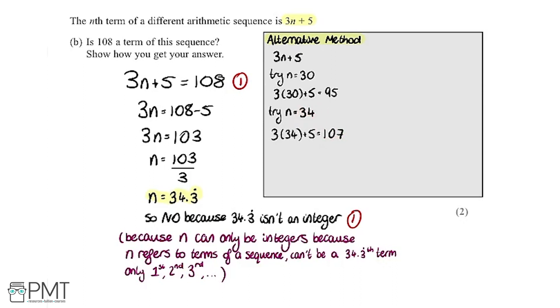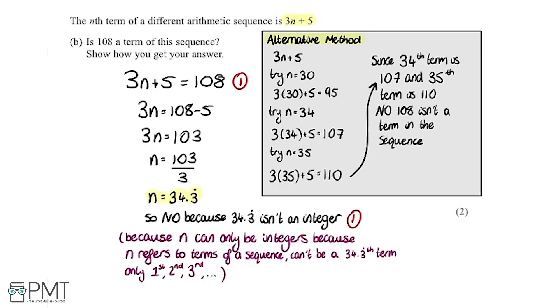Okay, so we've got 107 as our 34th term. So it's going to be impossible to get 108. But just to show that definitely, we're going to try the next term. So if the 34th term is 107, we're going to do the 35th term, 3 multiplied by 35 plus 5, and that gives us 110. So as our 34th term is 107 and our 35th term is 110, we know that 108 isn't a term because there's nothing in between the 34th term and the 35th term. Since the 34th term is 107 and the 35th is 110, no, 108 isn't a term in the sequence. You get one mark for doing some of this work here, and get another mark for saying no and giving a little bit of an explanation for it.